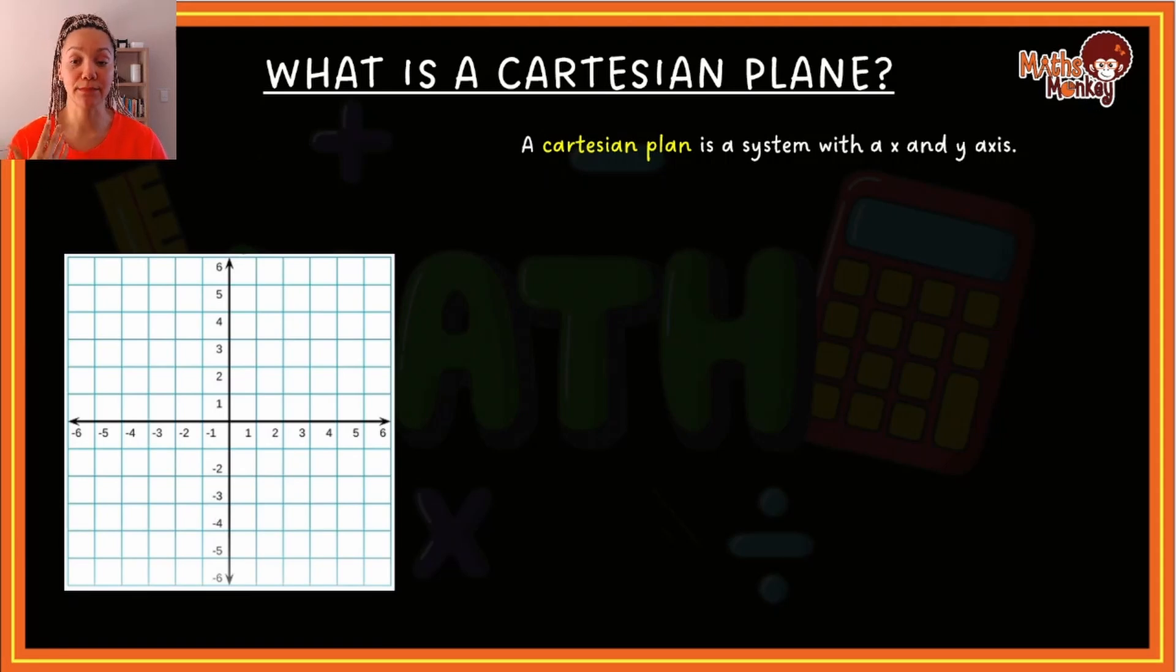Okay, it's similar to a grid, right, where the x-axis is the value that goes horizontally. Okay, and it will start at the center at zero. And when you move towards the right, the values get bigger. And when you move towards the left, the values get smaller.